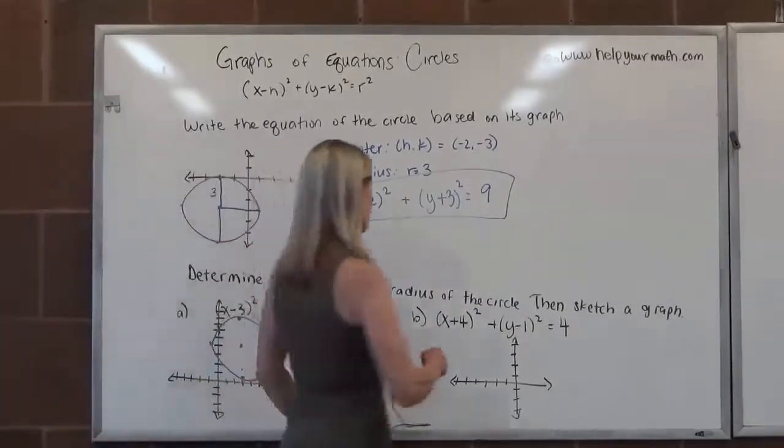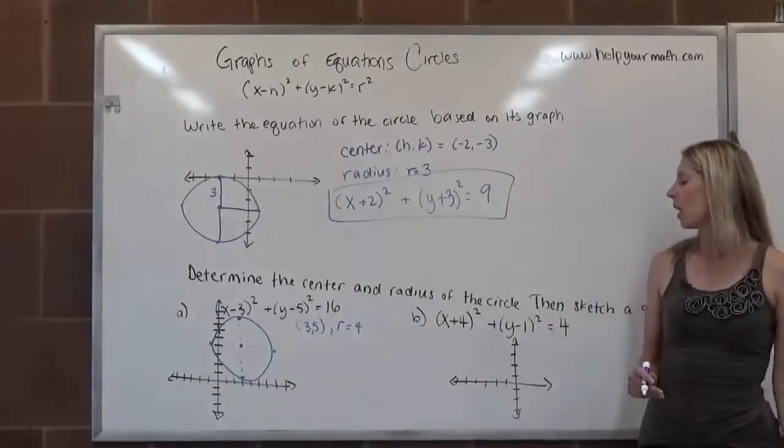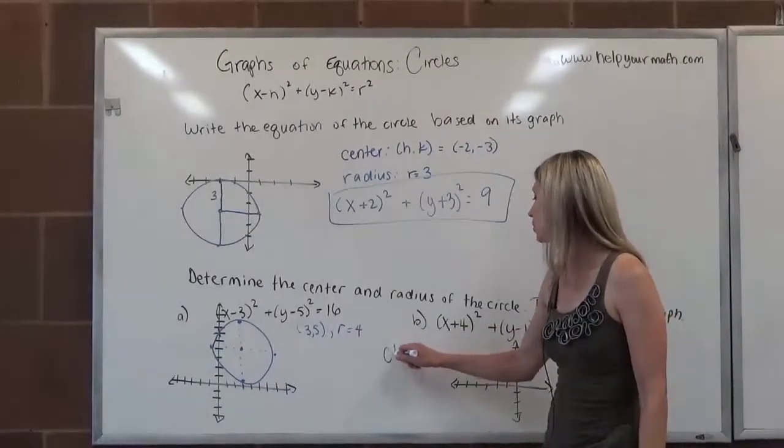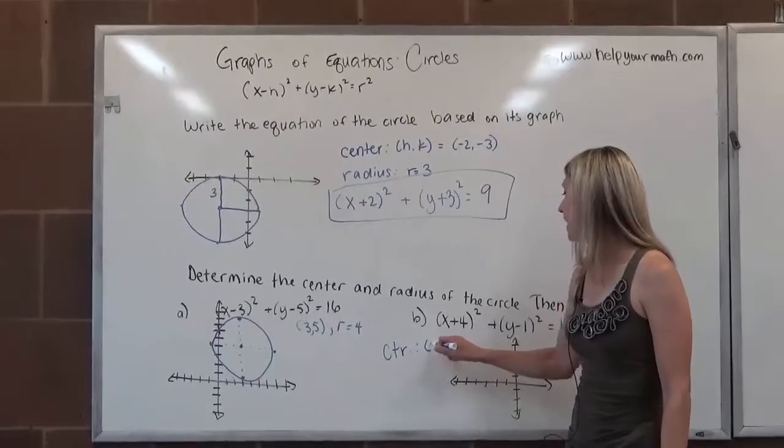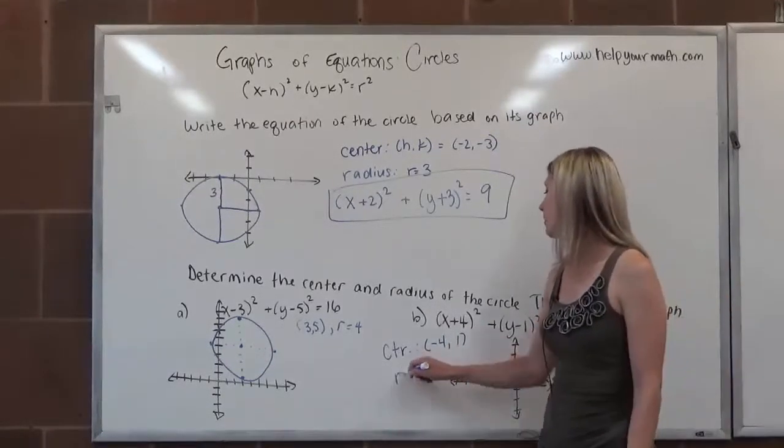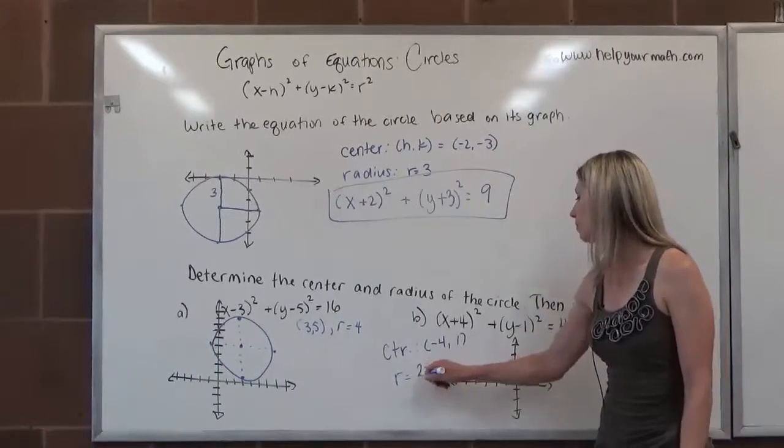In our next example, we have (x+4)² + (y-1)² = 4. So here, the center of the circle would be found at negative 4, positive 1. And the radius is the square root of 4, which is 2.